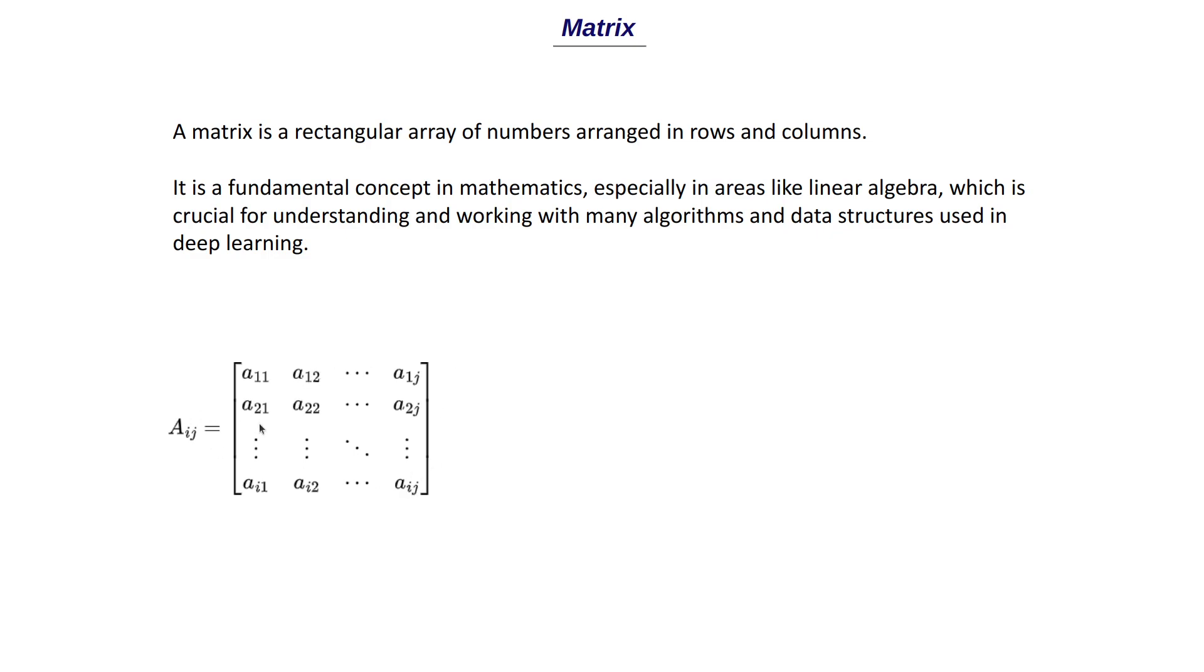So this we would represent it as A, I, J matrix and these are some examples. So this is a 2 by 2 matrix which has 2 rows and 2 columns and this is a 3 by 3 matrix which has 3 rows and 3 columns. So this is just some basic definition of matrix and a few examples of matrices.